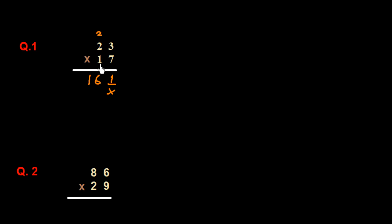First, this example. We know how to traditionally multiply numbers. If you have to multiply 23 with 17, first we multiply 23 with 7: 7 times 3 is 21, carry 2; 7 times 2 is 14, plus 2 is 16 — giving 161. Then we cross the unit place and multiply 23 by 1: 1 times 3 is 3, 1 times 2 is 2. We get 23, giving us 391.